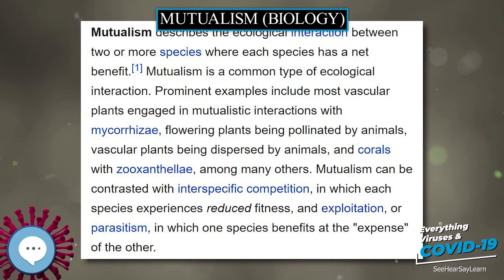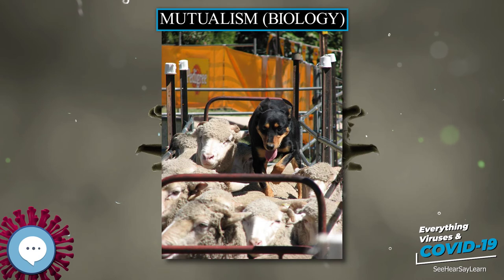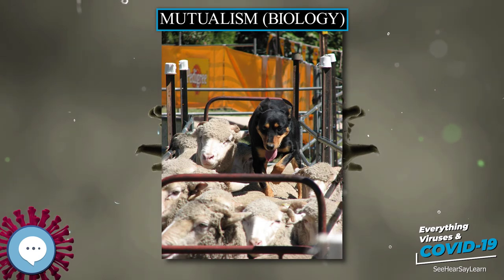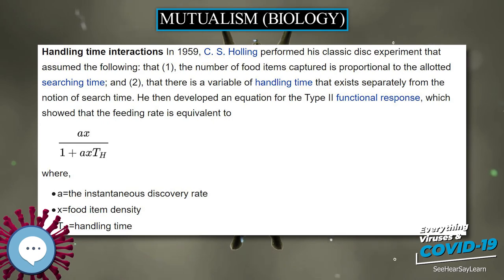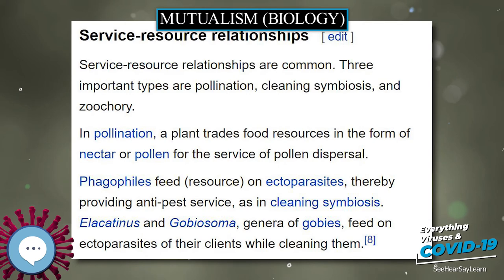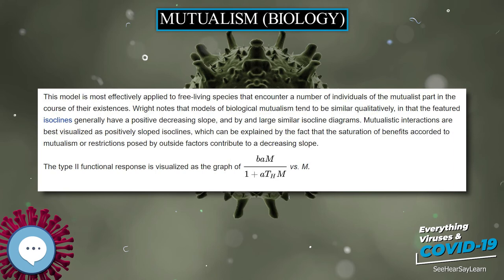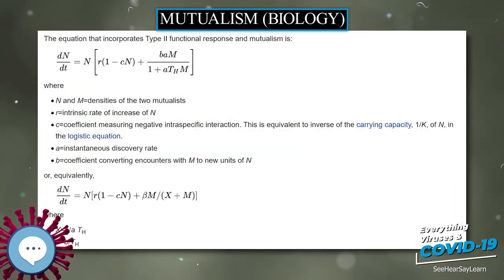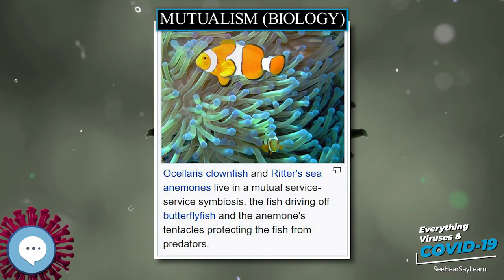Humans. Humans are involved in mutualisms with other species; their gut flora is essential for efficient digestion. Infestations of head lice might have been beneficial for humans by fostering an immune response that helps to reduce the threat of body louse-borne lethal diseases. Some relationships between humans and domesticated animals and plants are to different degrees mutualistic. For example, agricultural varieties of maize provide food for humans and are unable to reproduce without human intervention because the leafy sheath does not fall open, and the seed head, the corn on the cob, does not shatter to scatter the seeds naturally.